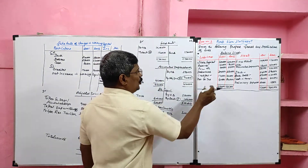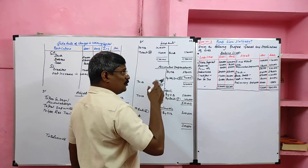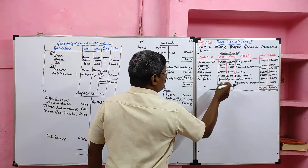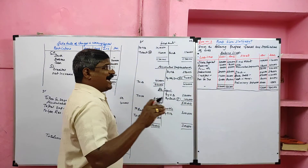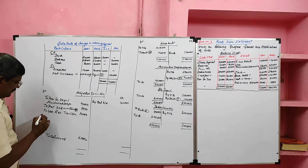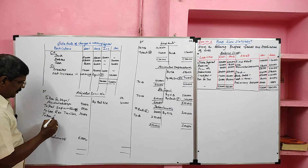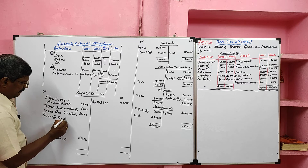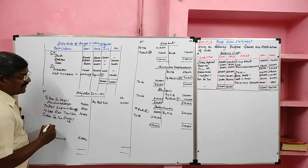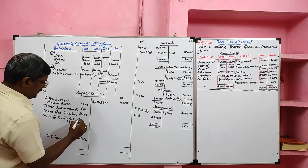Provision for tax is not given under current liabilities at the end, so the opening provision for tax is considered to be paid - it goes to the application side of the fund flow statement. The closing provision for tax is assumed to be made and is debited to the adjusted P&L account. The closing balance considered to be made is 80,000.